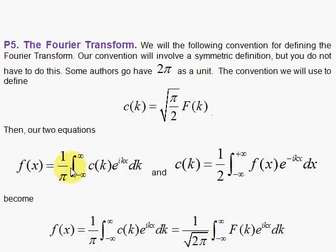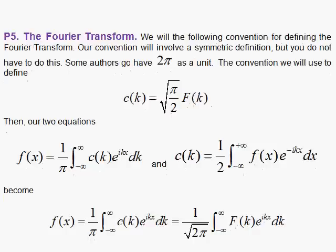However, I would like to give you the symmetric version, and the symmetric version is arrived at to get the same coefficients in the front here. And I do that by this trick. Watch this. C of k is equal to the square root of pi over 2 times capital F of k. So I'm going to insert this in the C of k in the left equation, and I'm going to insert it here for the right equation.